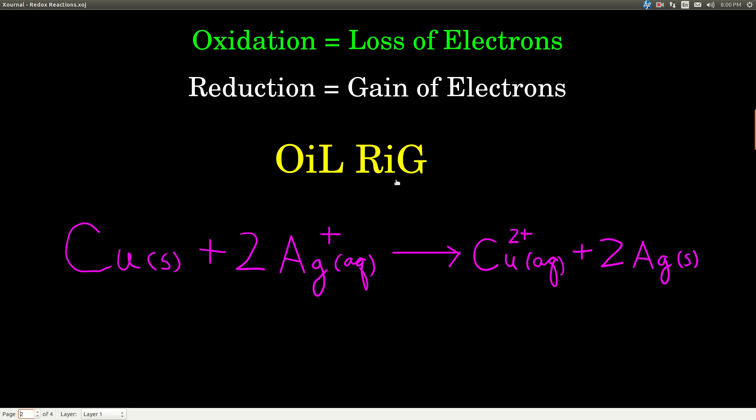And there's a little mnemonic device to remember this. Oxidation is loss of electrons, reduction is gain of electrons: OiL RiG.